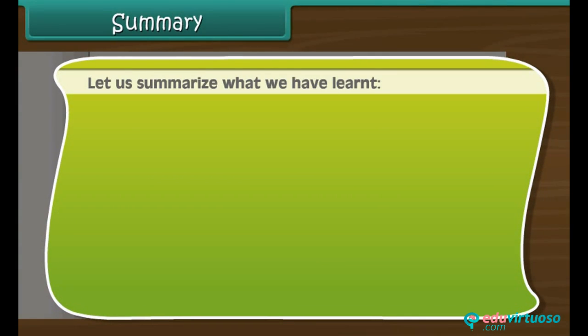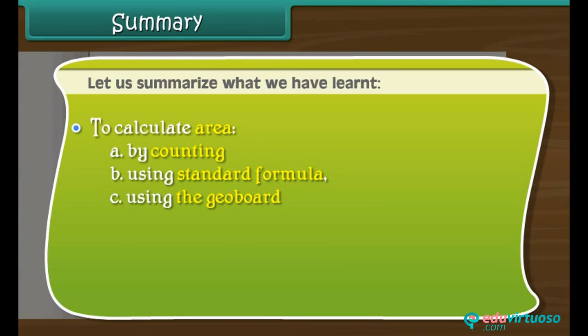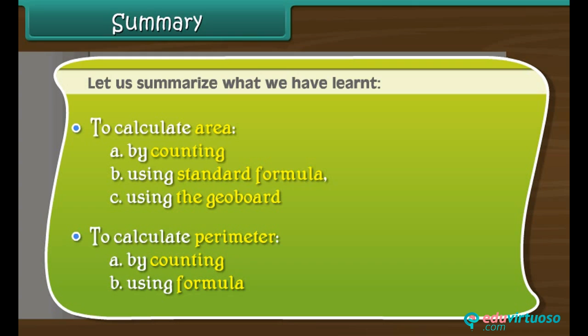Let's summarize what we have learned. To calculate area: by counting, using a standard formula, and using the geoboard. To calculate perimeter: by counting and using a formula.